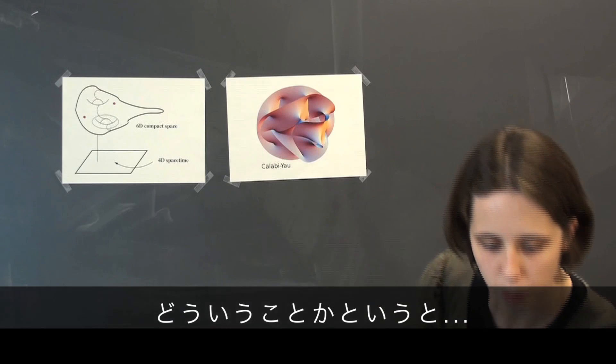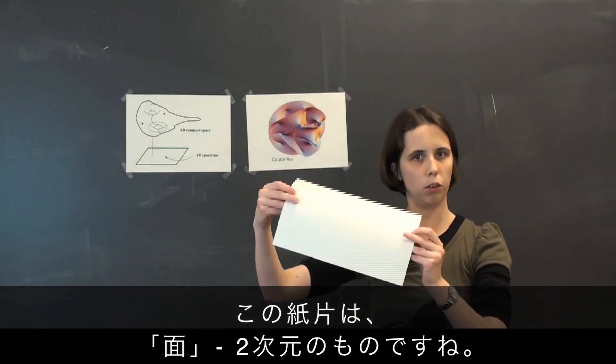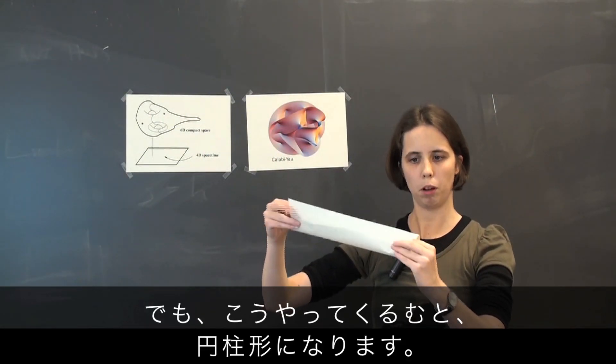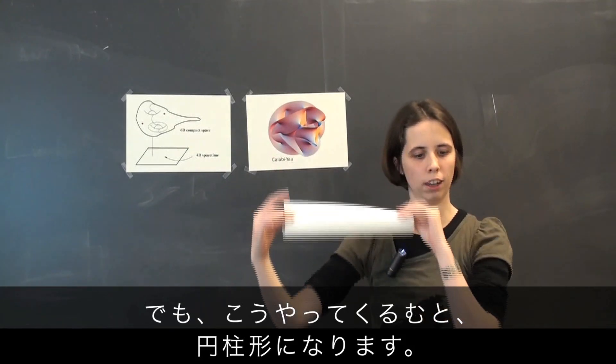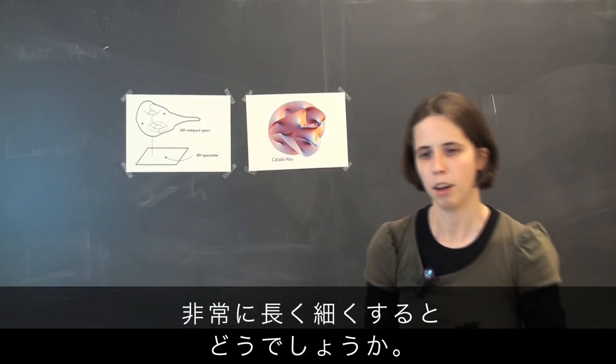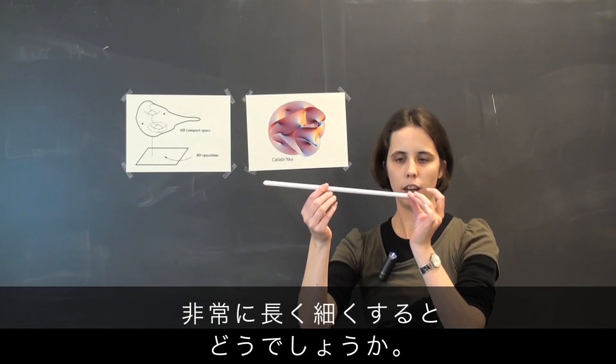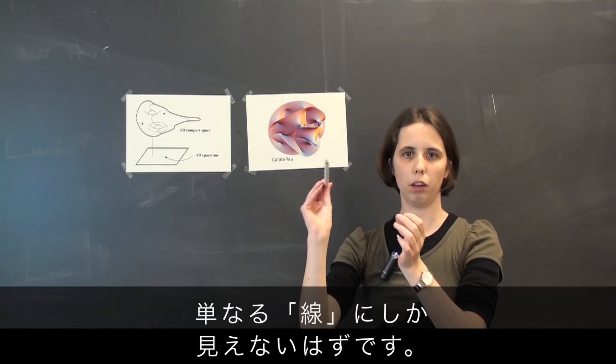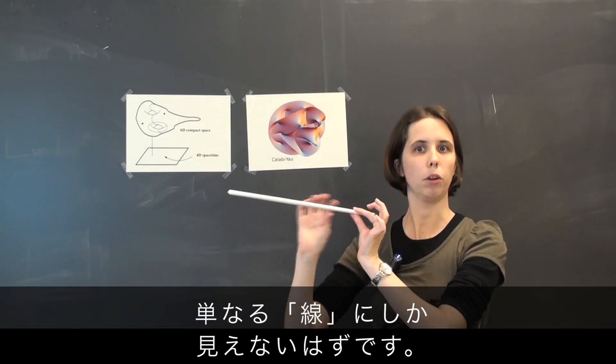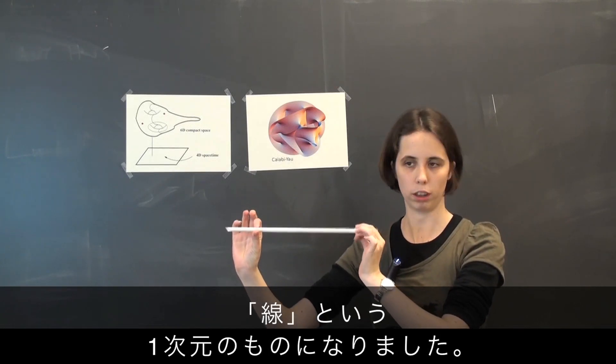And the concept is very simple. This sheet of paper is a 2-dimensional surface. But I can wrap it up to form a cylinder. And if I make the cylinder very long and very thin, people from far away might not even know that it's a cylinder but just a line which is a 1-dimensional object and no longer a 2-dimensional object.